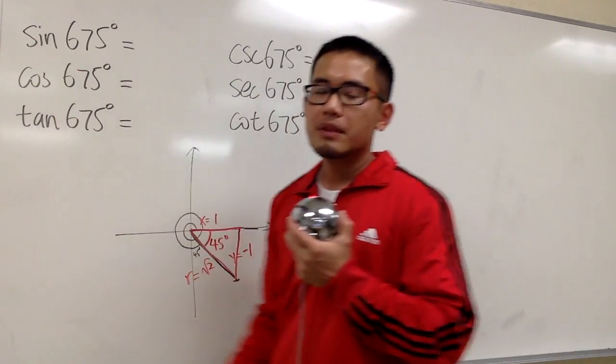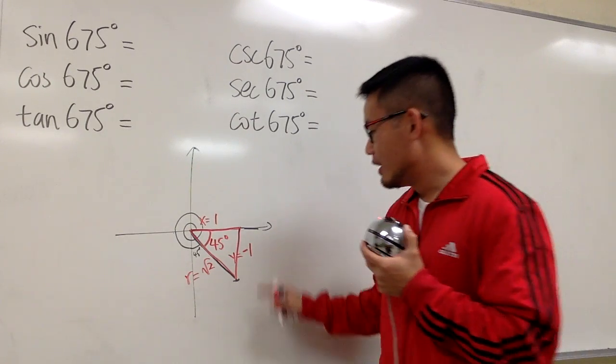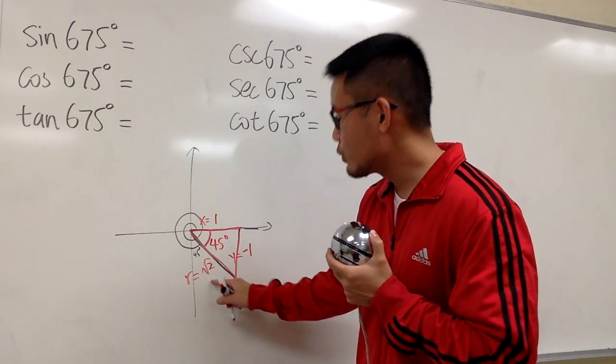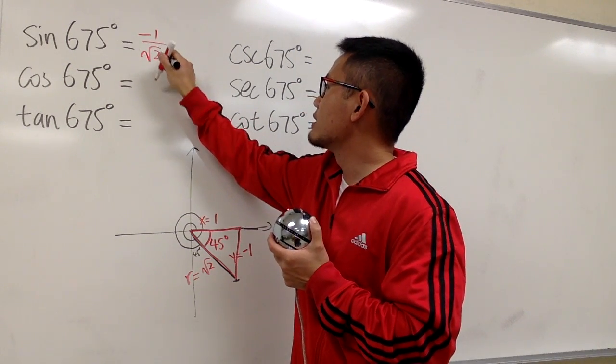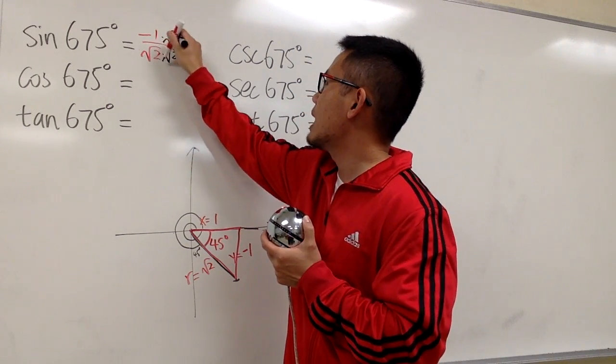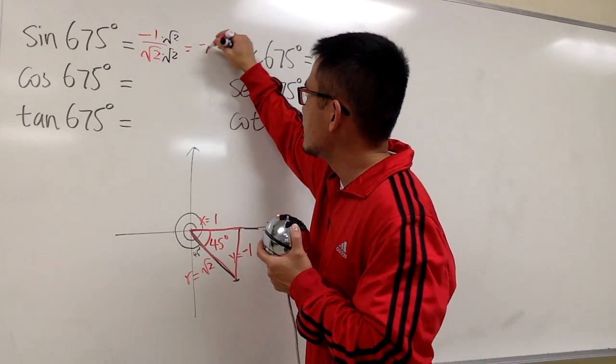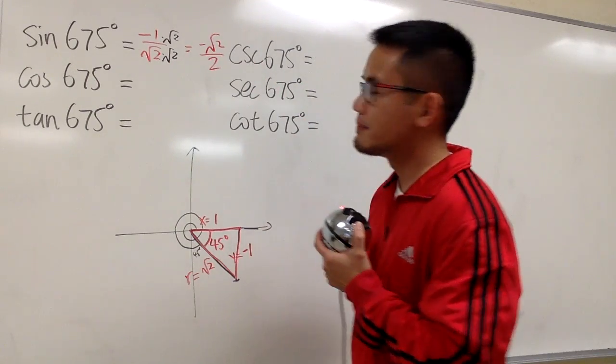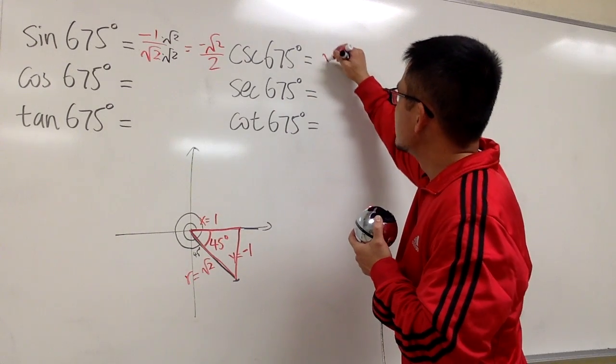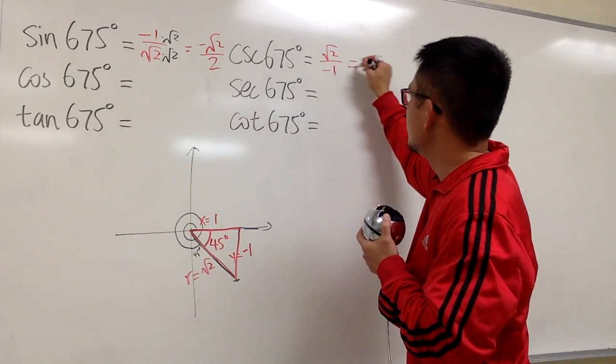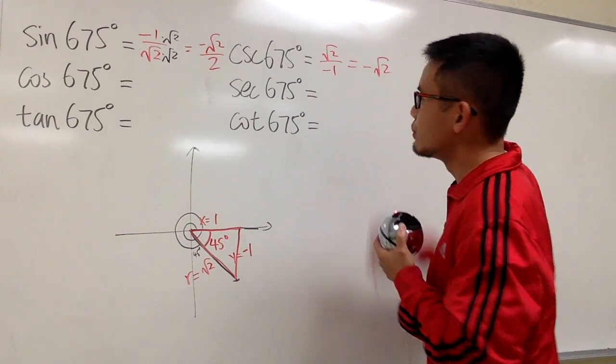For sine, it's going to be y over r. y is negative 1, r is square root of 2. So we have negative 1 over square root of 2. And now let's multiply square root of 2 bottom and the top. And we end up with negative square root of 2 over 2. And for cosecant, you just do this over that. Square root of 2 over negative 1, which is going to be negative square root of 2. Done.